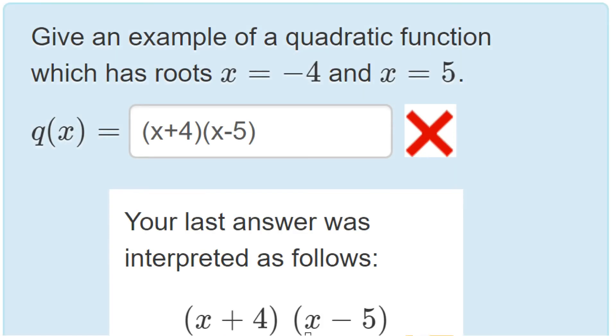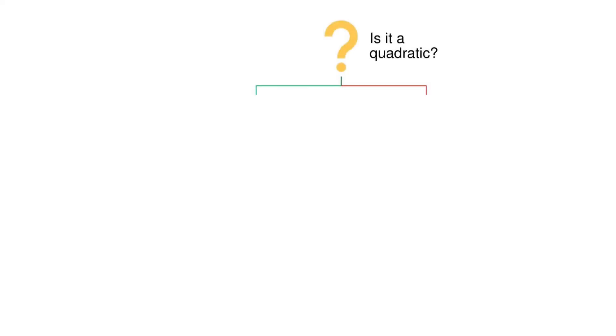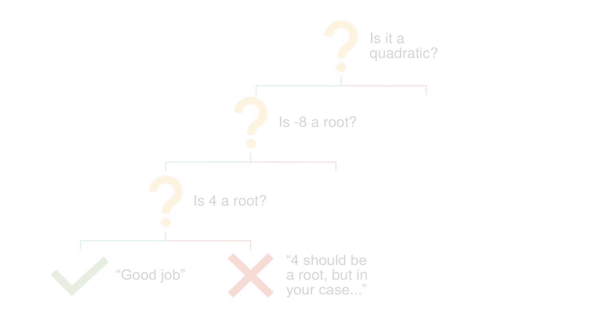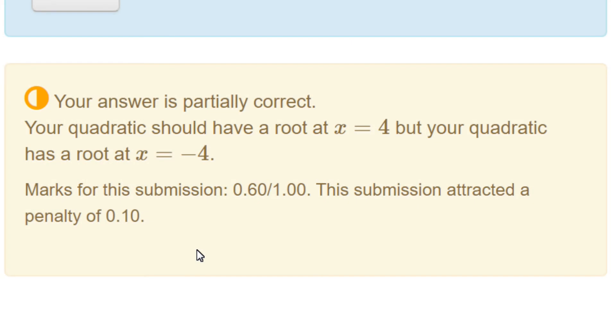Third, answers are graded based on their mathematical properties. Teachers build grading trees to make decisions about the student's answers, like 'Is it a quadratic?' or 'Does it have the right roots?' and adjust the feedback and marks awarded.